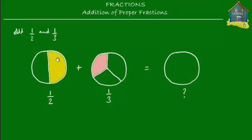Now let's try to add this yellow slice with this pink slice. Actually, you cannot add them as they are because these two slices are of different sizes. The yellow slice is bigger than the pink slice, and that's because these are unlike fractions — they have different denominators. The denominator in the first fraction is two, while in the second it is three.